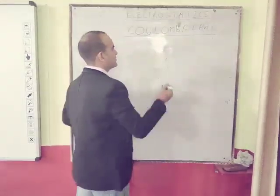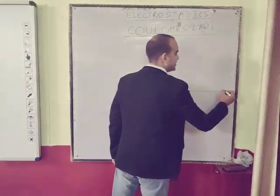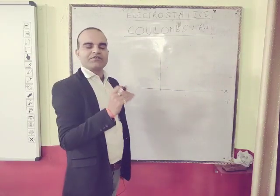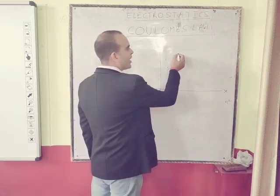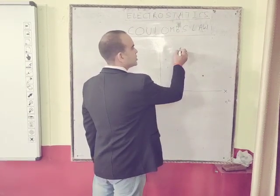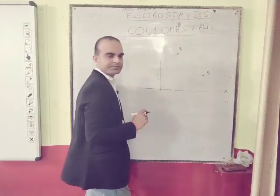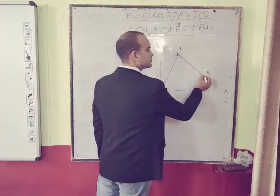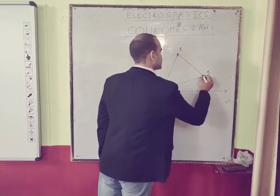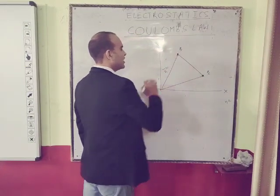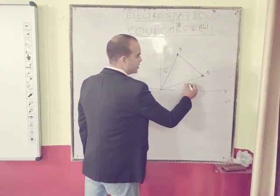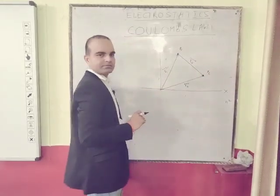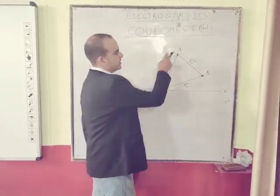First, take a Cartesian coordinate system to define position vectors. Then consider the two point charges Q1 and Q2 we discussed. The position vector of Q1 is R1, and the position vector of Q2 is R2. And if we take the vector from 1 to 2, that is R12.